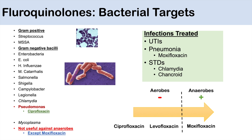For pneumonia, we generally use Moxifloxacin, as it can cover gram-positives including Staphylococcus aureus, the most common cause of post-infectious pneumonia. We could also use fluoroquinolones to treat STDs, including Chlamydia and chancroid, and for pseudomonal infections we would use Ciprofloxacin.